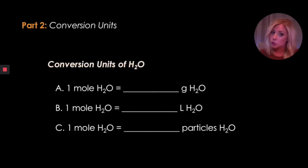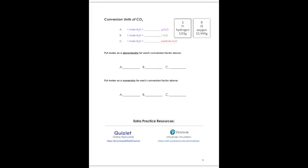We're going to talk about conversion units next, so pull out your notes and work along with me. Using what we know, we can compile conversion units — things equal to each other — so we can convert from one unit into another. We see that one mole of water equals an X number of grams, and we figure that out using molar mass. If you have water, H₂O, the two capital letters tell us we have two elements: H for hydrogen and O for oxygen.